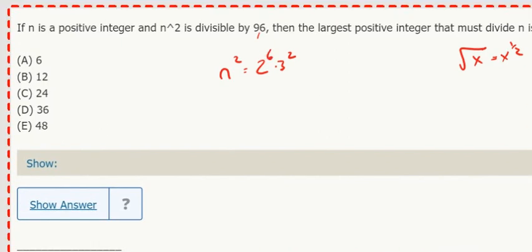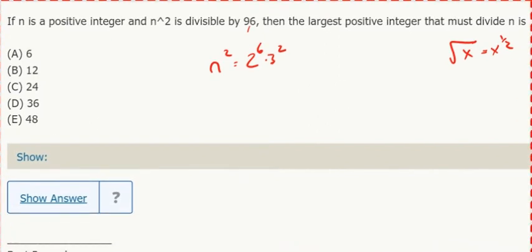What they've done is they've given us an incomplete picture of what n squared is. It can't be 2 to the 5th, 3. It's not a perfect square. It's 2 to the 6th, 3 squared. That's the next possible value of n squared.